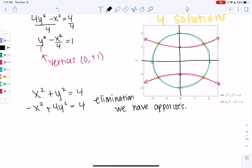So it's up to you. You have to decide if substitution or elimination seems more efficient. So elimination is great because we already have opposites. So we get 5y squared equals 8.